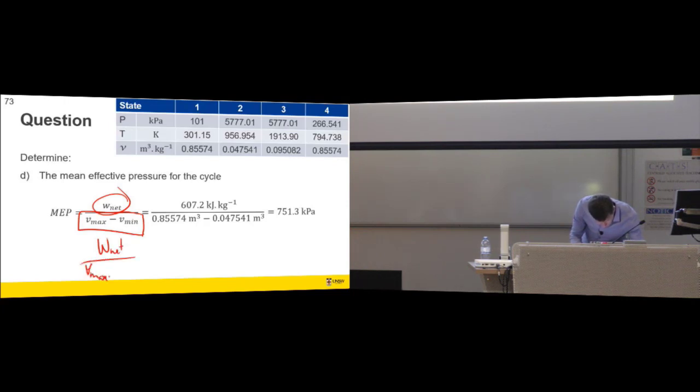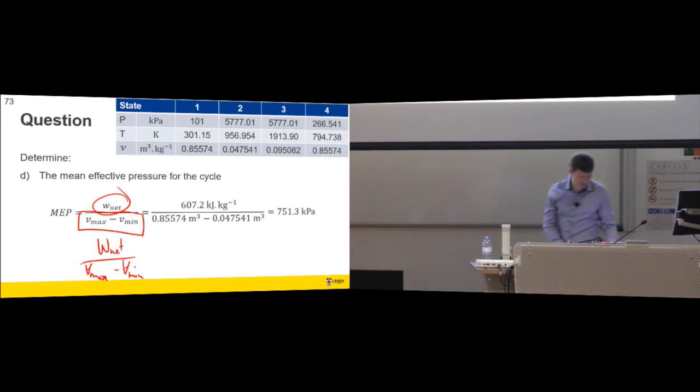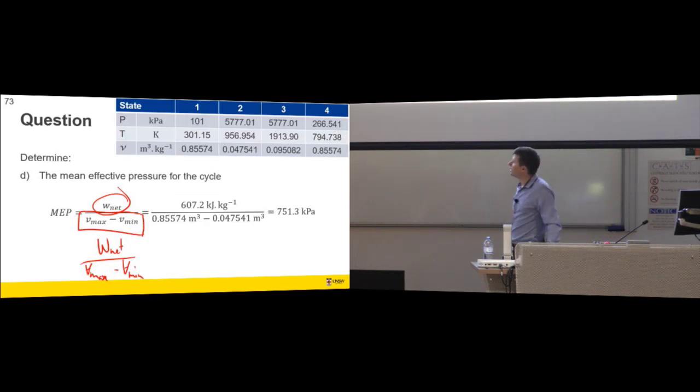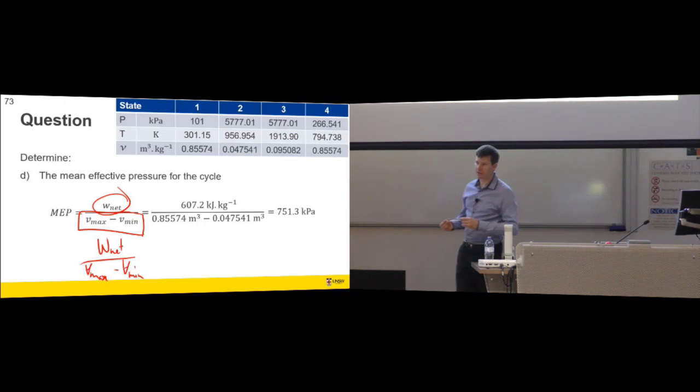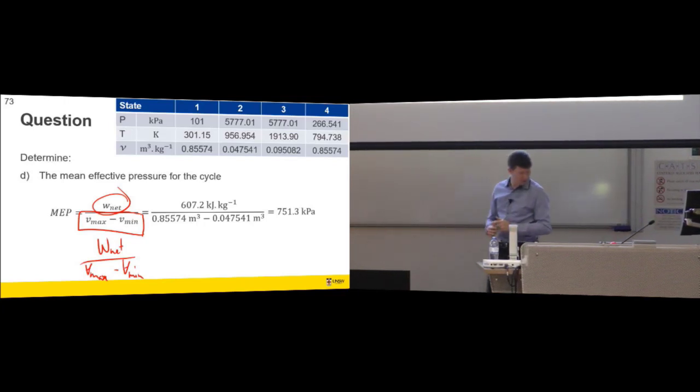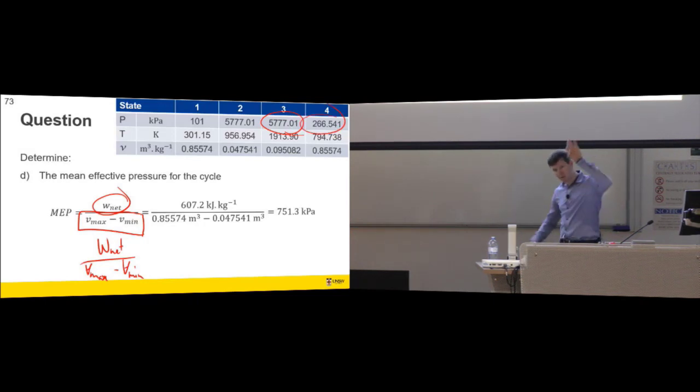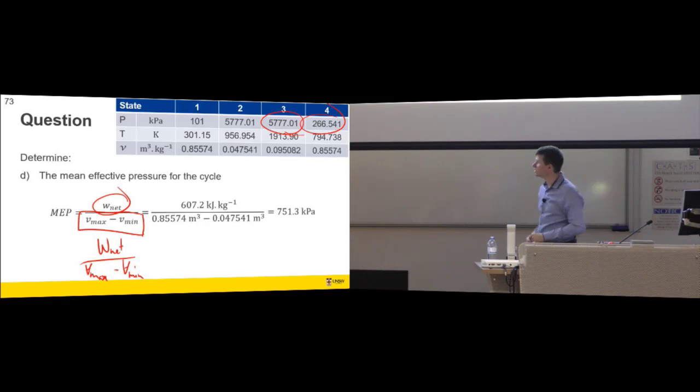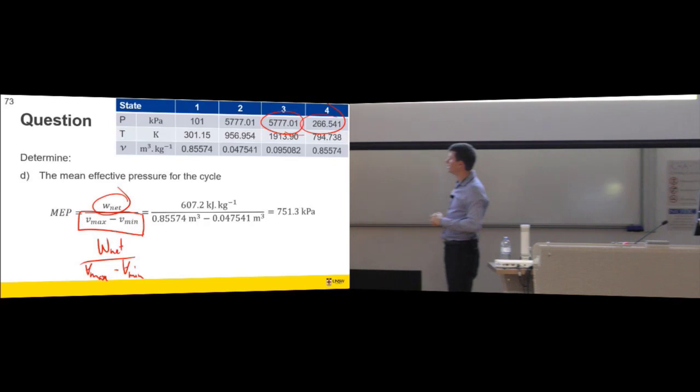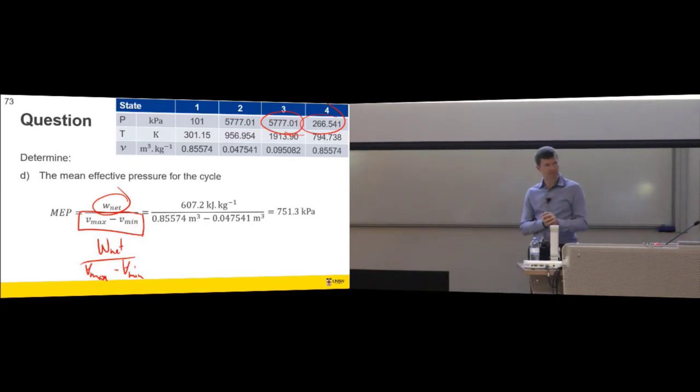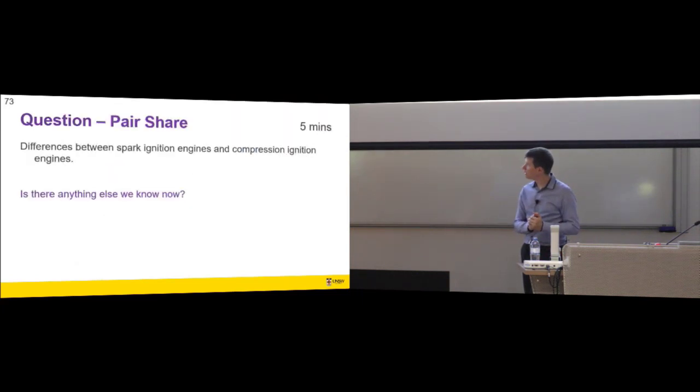And I could have done this on an extensive basis, because we have the extent. So that could be W net divided by V max minus V min. You understand that if we divide the top and bottom both by mass, then we get the same answer. And I've already got my specific volumes calculated. And so the mean effective pressure for the power stroke would be 750 kPa, would be the equivalent pressure. Rather than going from 5.7 megapascals down to 250 kilopascals over a curve, if you could hold that constant, that would be the mean effective pressure. It's just a way of comparing different engines.